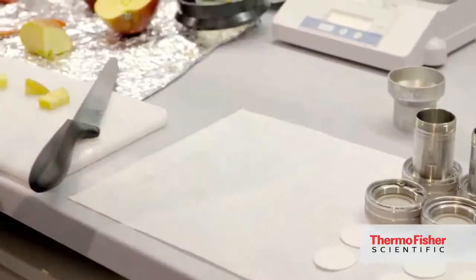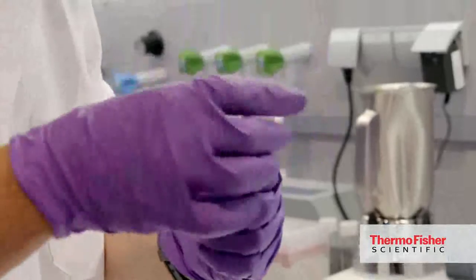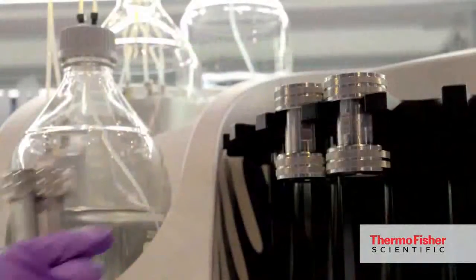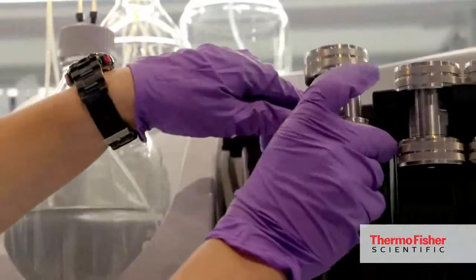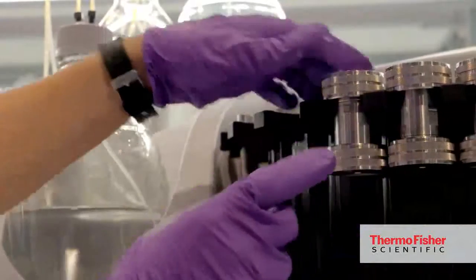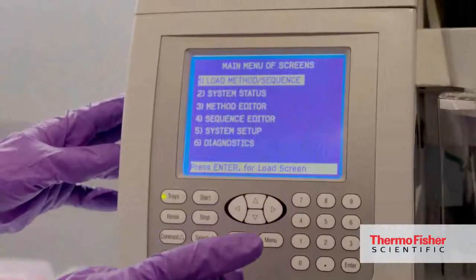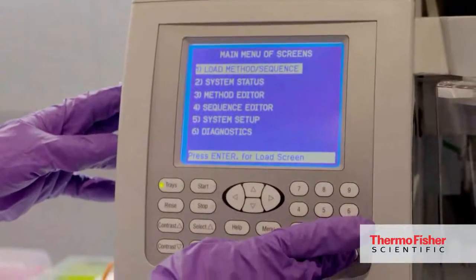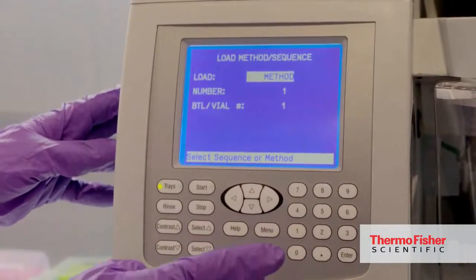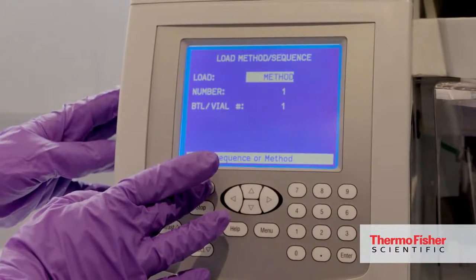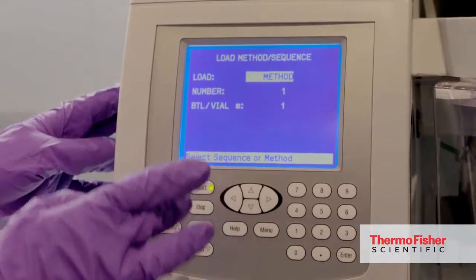And then close the cell which is ready for extraction. So the ready cell is placed into the tray of the ASE. Different sizes can be put. Whenever it is ready, then we simply need to program the method and start the ready method by clicking on the start button.